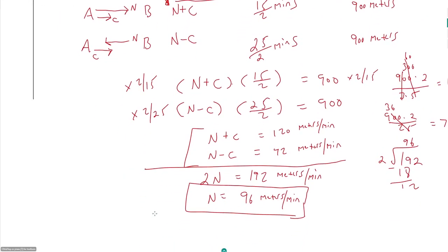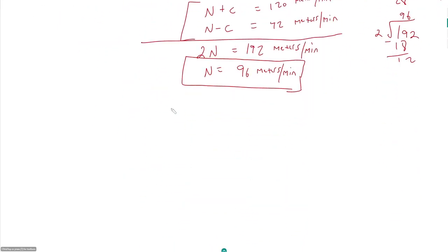The time for Nemo to go 900 meters. Now it's just a final rate times time equals distance, but here the distance is 900 meters at his individual rate, 96 meters per minute. It said approximately, so that's a hint that I might not get a round number here. So time is 900 over 96.